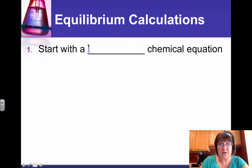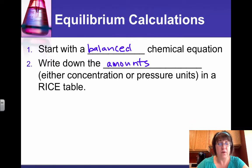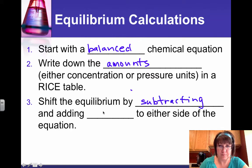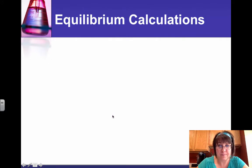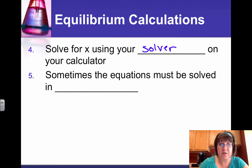So the first thing we need to do is start with a balanced chemical equation. Then we'll write down the amounts of whatever they give us, products or reactants, in what's called a rice table. Then we shift the equilibrium by adding or subtracting x to either side of the reaction. And we'll use x for some amount of moles that we just don't know what it is yet. Then we solve for x using the solver function on your graphing calculator.